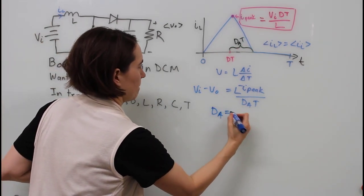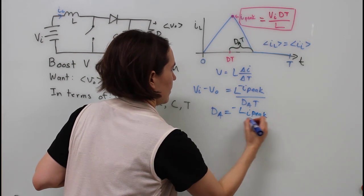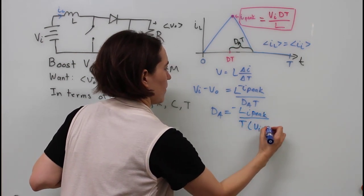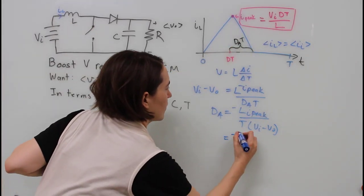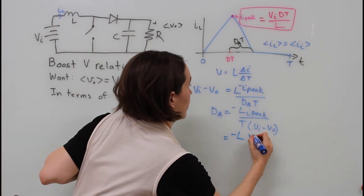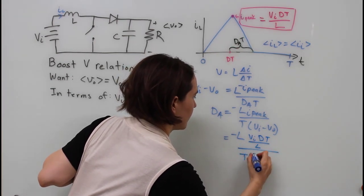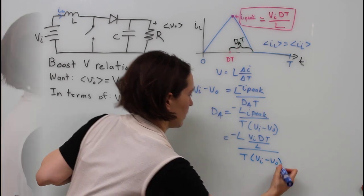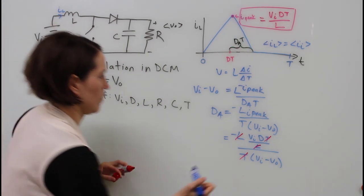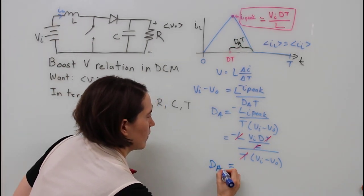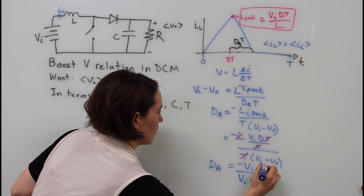We plug all those values in and we do some math. After writing everything out here and moving everything around, we change the Da by itself. We cancel a bunch of things out, then we get this expression for the Da term.